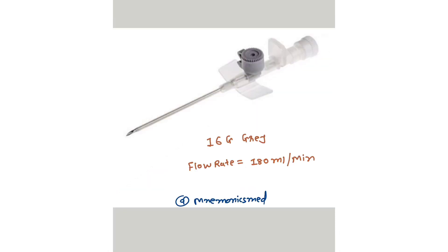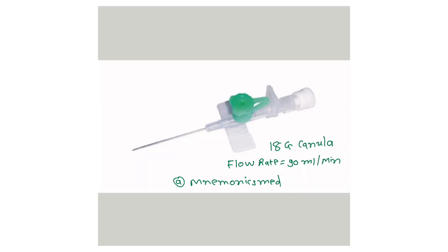This is the 16 gauge cannula — it is gray colored and the flow rate is 180 ml per minute. Now, this is the 18 gauge cannula — its flow rate is 90 ml per minute.